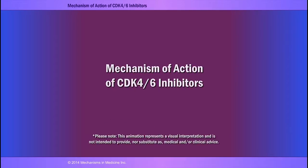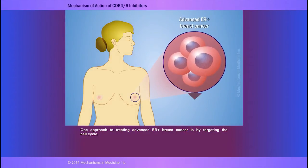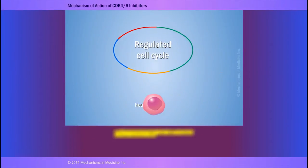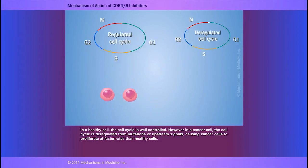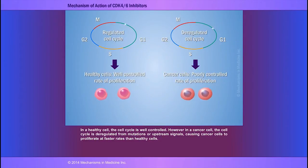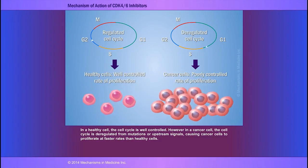In order to better understand the biology of the signaling pathways and how they relate to the mechanism of action of CDK4-6 inhibitors, we have prepared animations that illustrate these points. One approach to treating advanced estrogen receptor-positive breast cancer is by targeting the cell cycle. In a healthy cell, the cell cycle is well controlled; however, in a cancer cell, the cell cycle is deregulated from mutations or upstream signals, causing cancer cells to proliferate at faster rates than healthy cells.